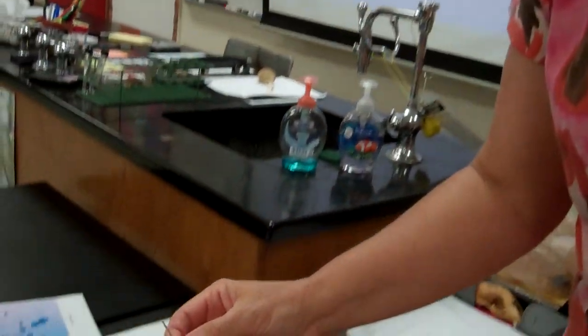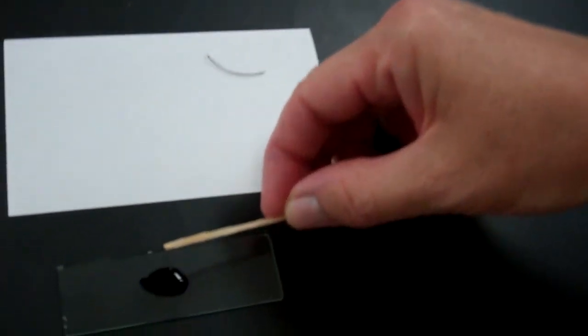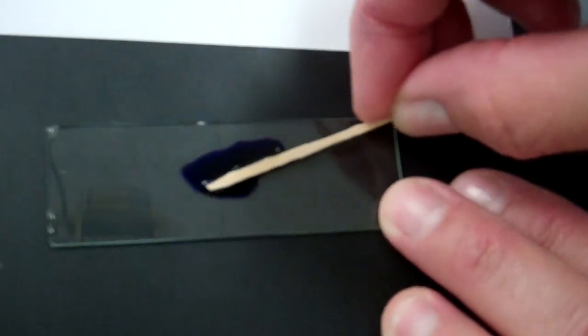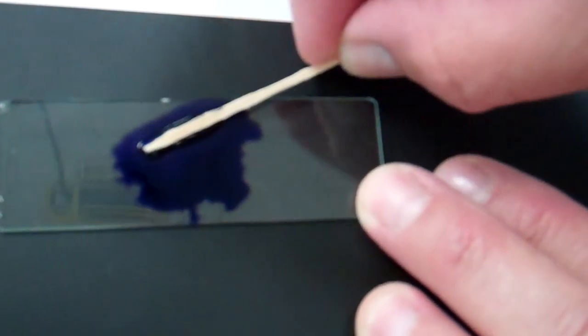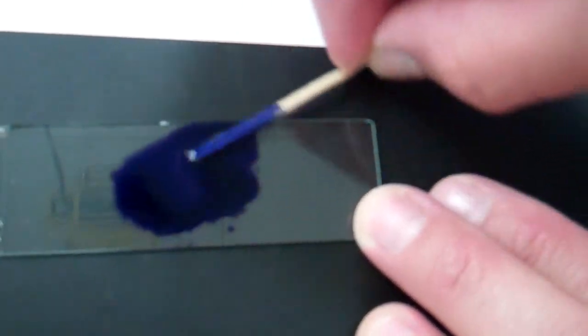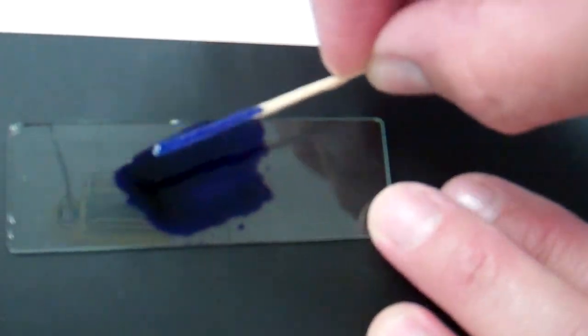Once you do that, you're going to swirl it into the dye. One side, spread the dye out, flip it over. Do the other side and get all your cheek cells spread out. And then you're going to throw that away.